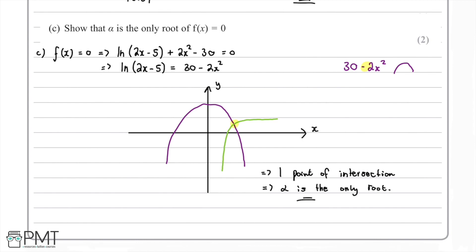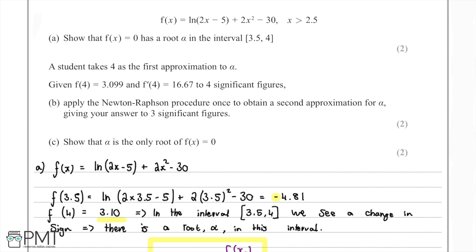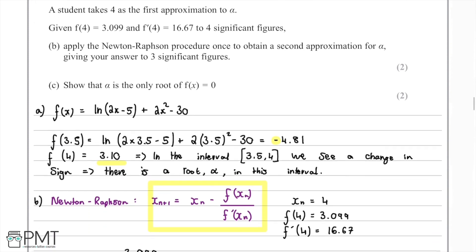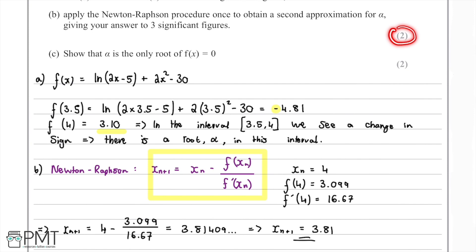Looking back at the marks: part A was worth two marks — one for calculating f(3.5) and f(4), and a second for recognising that a change in sign results in a root in the interval. Part B was also worth two marks — one for stating the Newton-Raphson formula and substituting values, and one for concluding that xₙ₊₁ = 3.81.